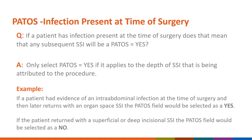Another question is: if a patient has infection present at the time of surgery, does that mean that any subsequent SSI will automatically be PATOS equals yes? The answer is no. The PATOS field should only be marked yes when it applies to an SSI event that is at the same level as the infection that was present at the time of surgery. For example, if a patient had an intra-abdominal infection at the time of surgery and then later returns in the surveillance period with an organ-space SSI, the PATOS field would be yes. However, if the patient returns with a superficial or deep incisional SSI, the PATOS field would be no.